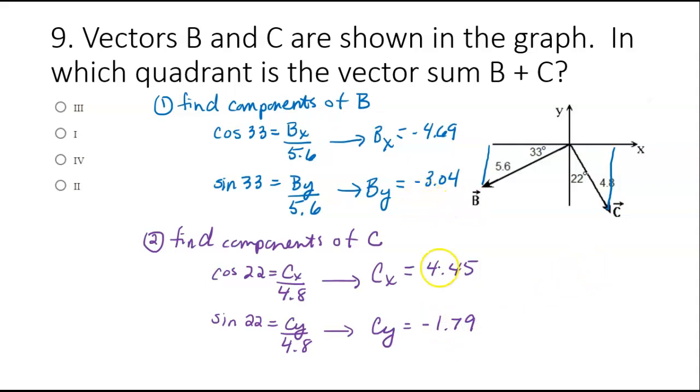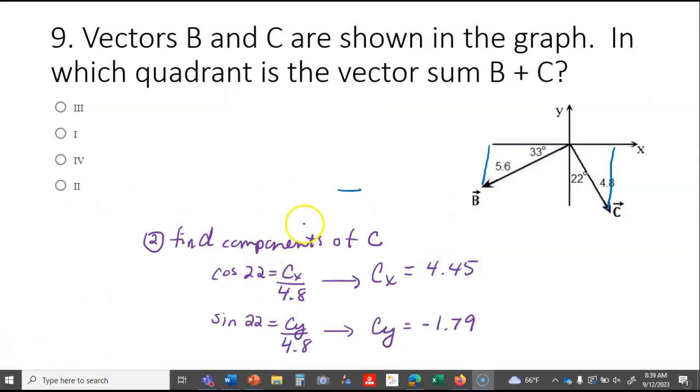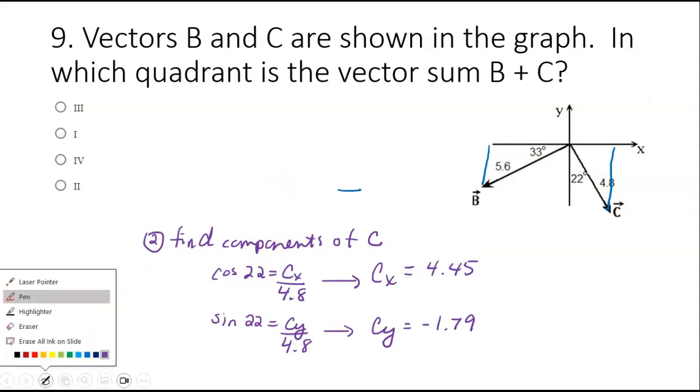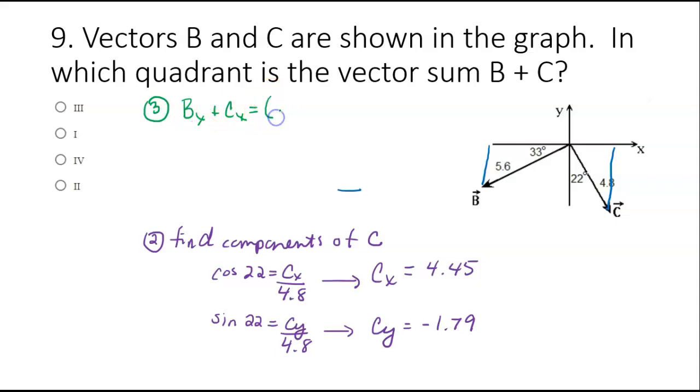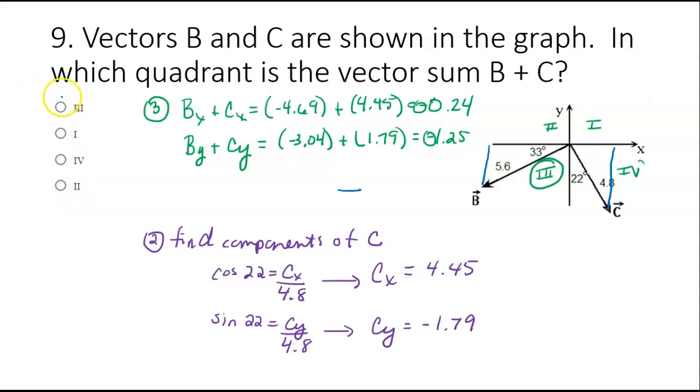Step 3. We found the components of B and C, now we're going to add them. BX plus CX equals negative 4.69 plus 4.45, which equals negative 0.24. And BY plus CY equals negative 3.04 plus 1.79, which is negative 1.25. So both of these are negative. If we go through the quadrants, 1, 2, 3, 4, the only quadrant where both are negative would be the third quadrant. X is negative and Y is negative. So that's 3.